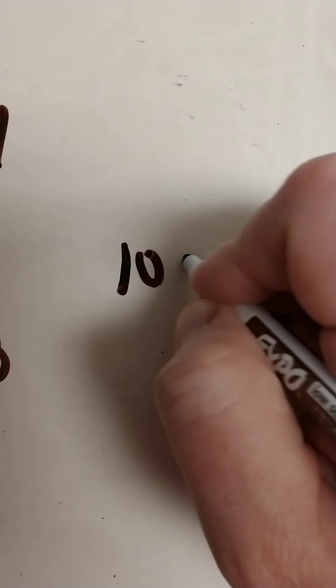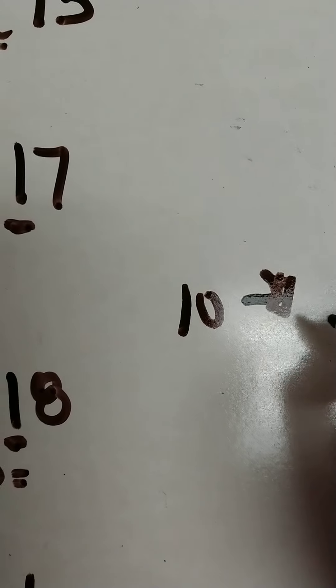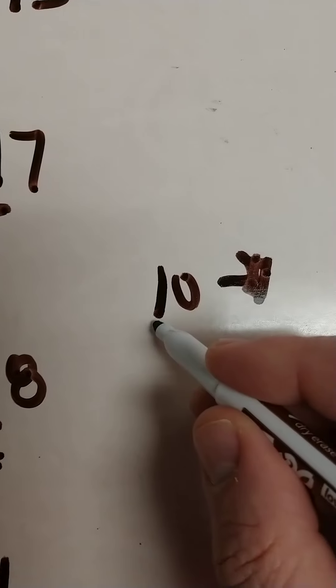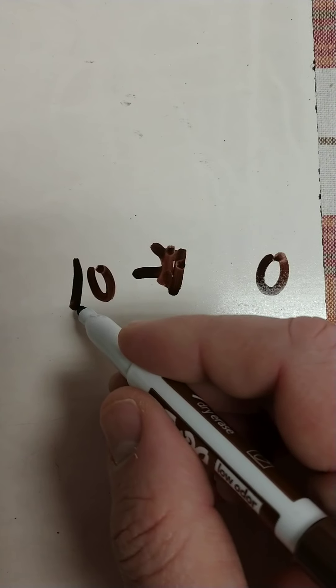Now, if we had 10 and we wanted to do 10 more, we would just add 1. So we already have a 0 in the ones column, and we already have a 1 in the tens, so we'd just make it 1 more, make it 2.